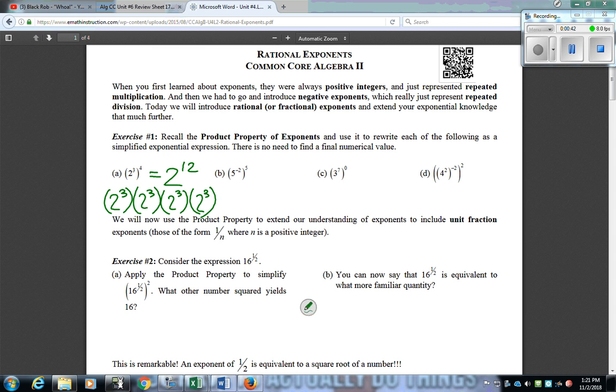They do try to throw in a trick one here in C. 3 to the 7th raised to the 0 power would be 3 to the 0, because 7 times 0 is 0, which would equal the number 1. So a special case in that question.